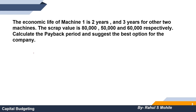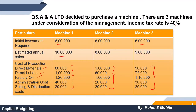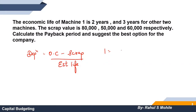Scrap value is also given, which will be useful for calculating depreciation. The formula is: (Original Cost − Scrap) ÷ Estimated Life. For Machine 1, the cost is 6 lakhs, scrap is 80,000, and life is 2 years.